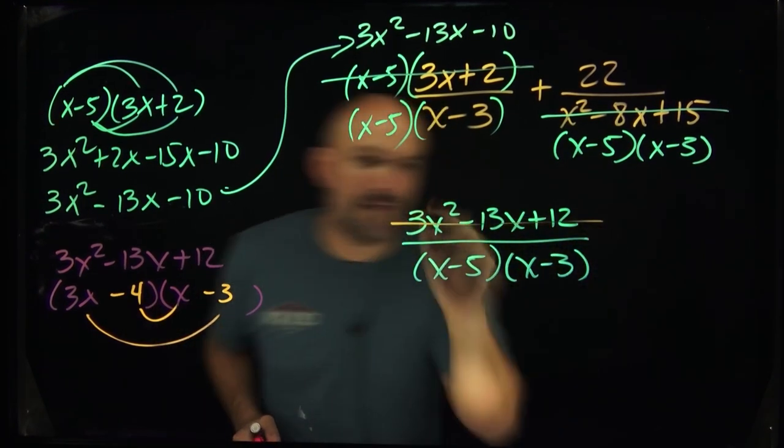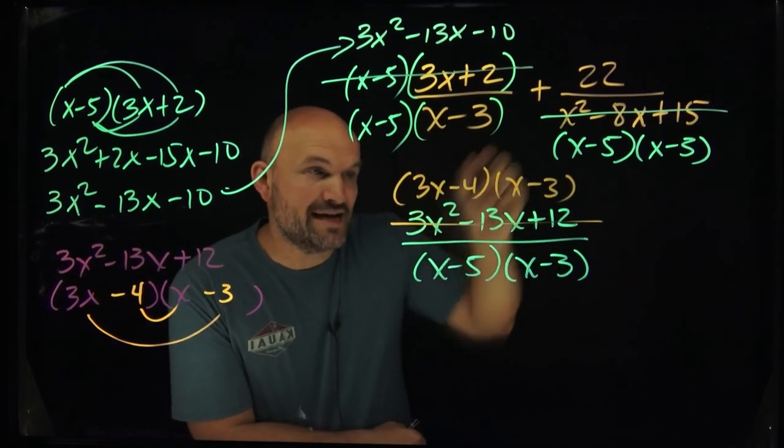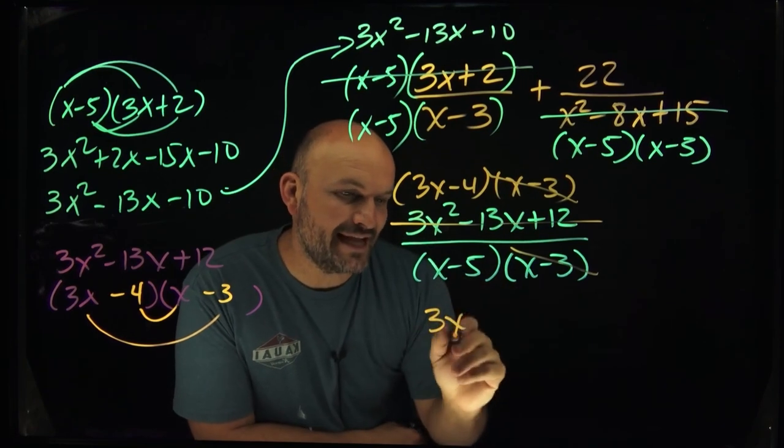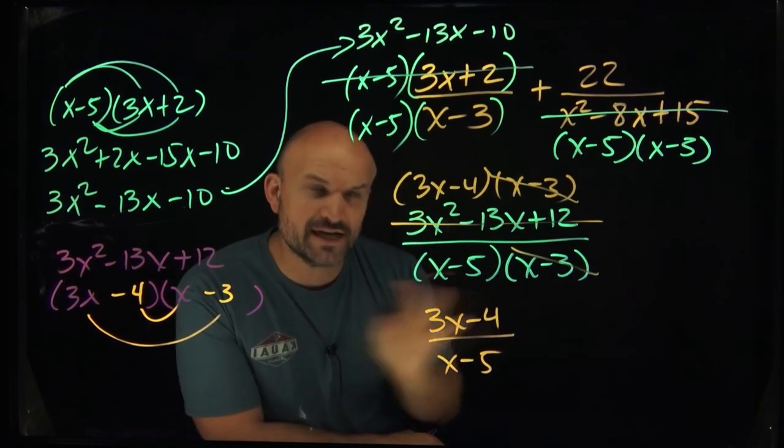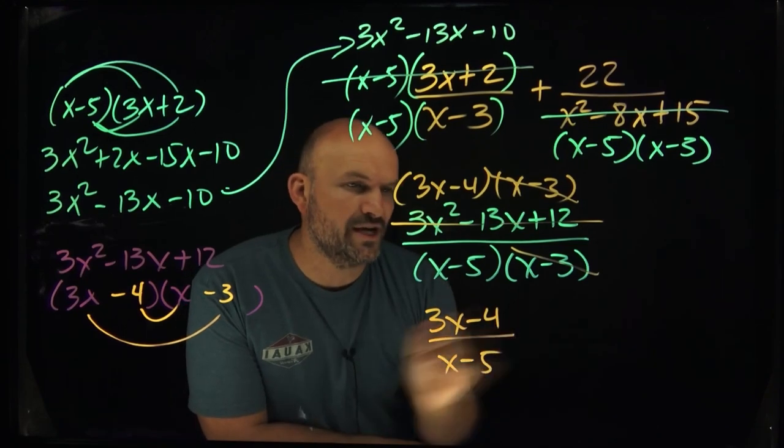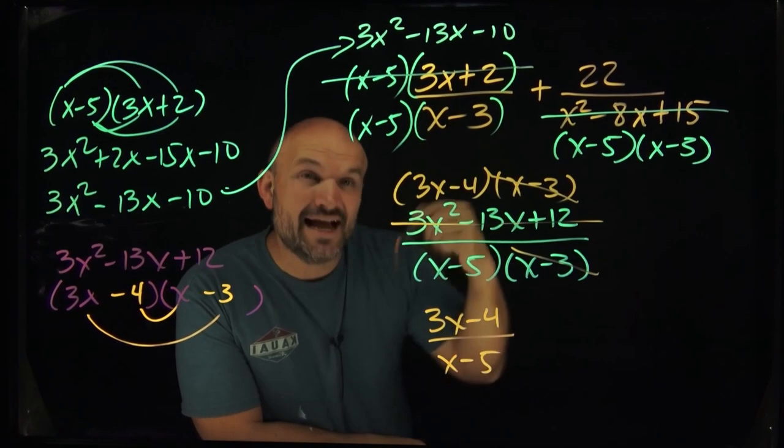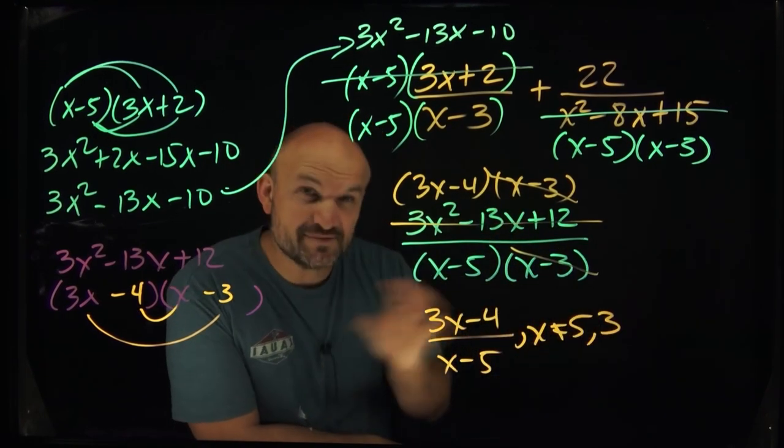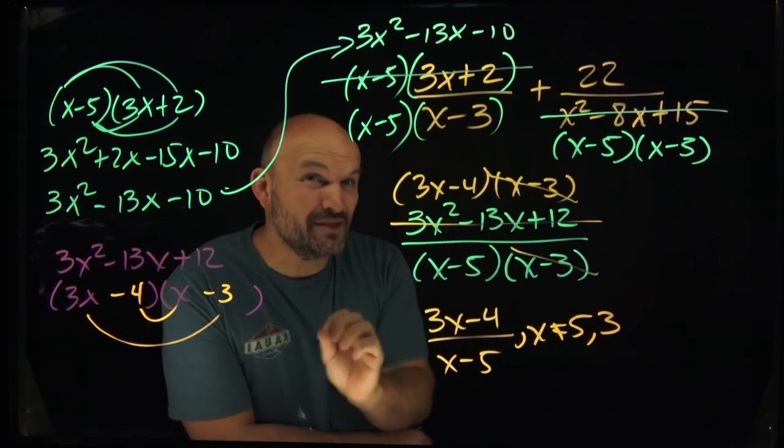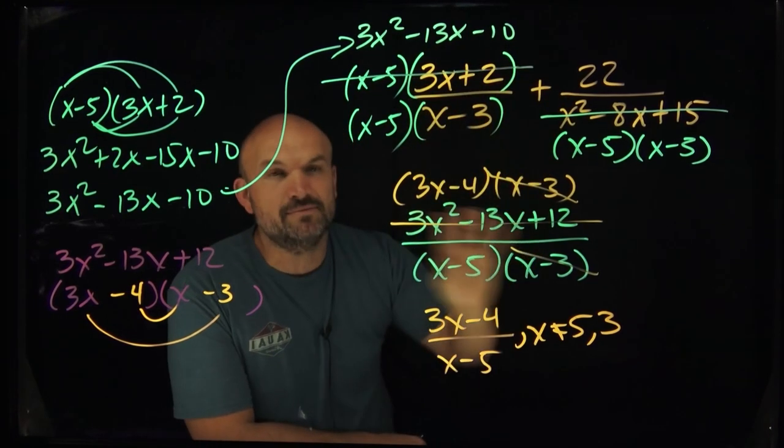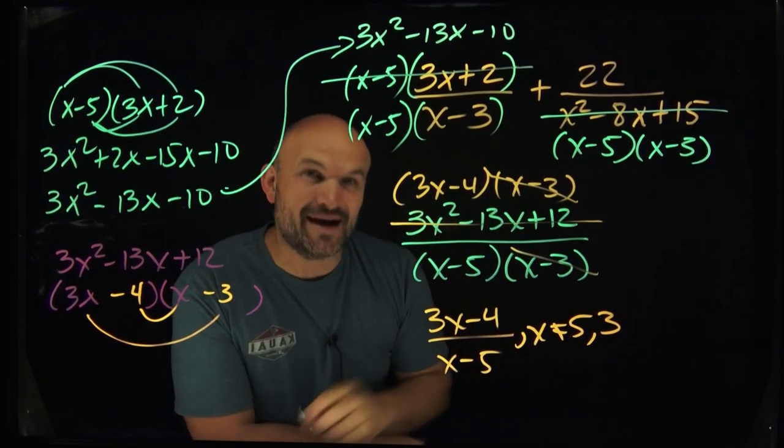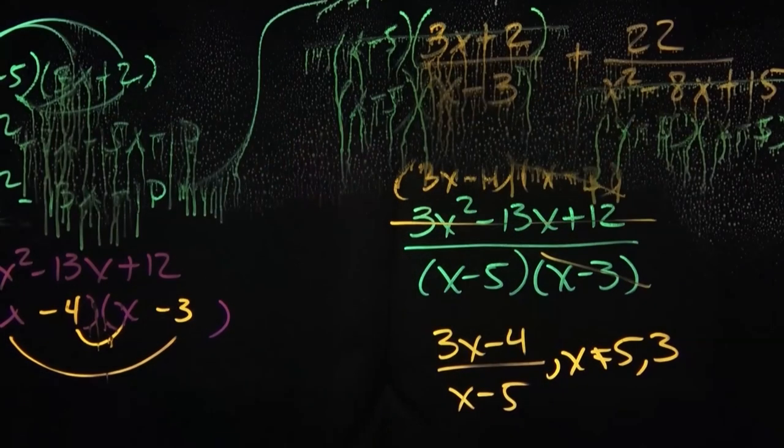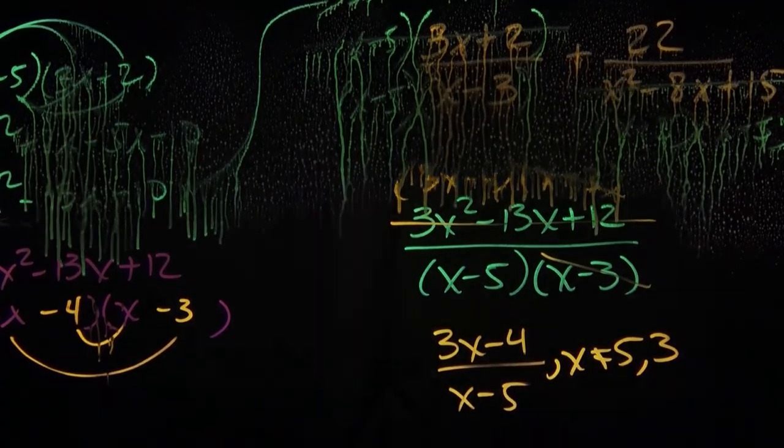So now I'm going to rewrite this as now a three X minus four times an X minus three. Now these are going to divide out. Give me three X minus four all over X minus five. If we're going to talk about our excluded values in this case, we can also say X cannot equal five, as well as X cannot equal three, because even though it got divided out, it's still an excluded value. Now this example got simplified pretty well. And I think it's really important that you can understand how to simplify in the beginning, as well as simplify in the end. But in the next video, I'm going to show you how to simplify a huge rational expression all the way down to a single value.